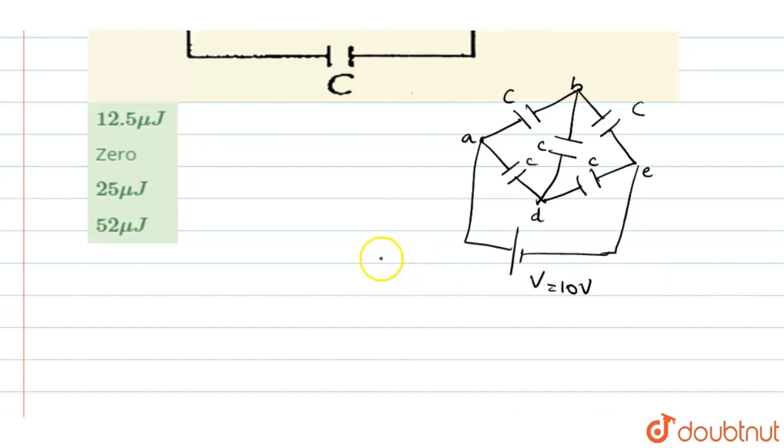Now, when you have seen here, the equivalent capacitance will be equal to C itself. In such type of Wheatstone's network, the equivalent capacitance C equivalent will be nothing but C.